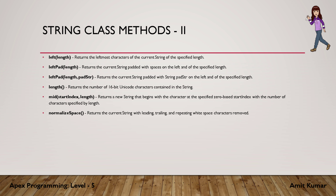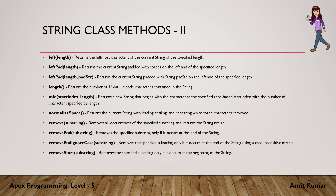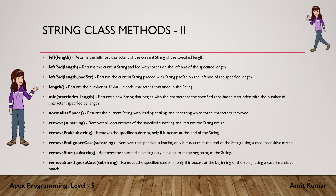normalizeSpace removes leading, trailing, and repeating whitespace characters, providing a single whitespace for all spaces in between. remove removes all occurrences of a specified substring. removeEnd removes the specified substring only if it occurs at the end of the string. removeEndIgnoreCase behaves similarly but ignores cases. removeStart removes the specified substring only if it occurs at the beginning of the string. removeStartIgnoreCase behaves similar to removeStart but ignores cases.